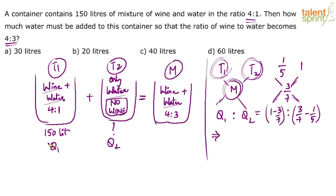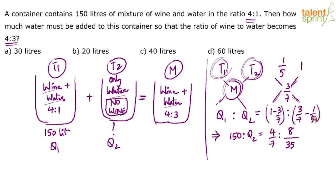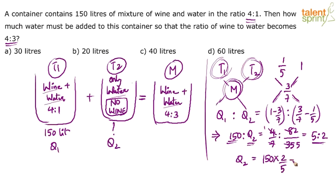So we can solve it now. We already know that q1 is 150 liters. So: 150 is to q2 equals (1 minus 3/7) divided by (3/7 minus 1/5). The first difference is 4/7. For the second difference, the LCM of 7 and 5 is 35: that gives 15 minus 7 equals 8, so 8/35. The ratio simplifies to 5 is to 2. So 150 is to q2 equals 5 is to 2, meaning q2 equals 150 × 2/5, which is 60 liters.